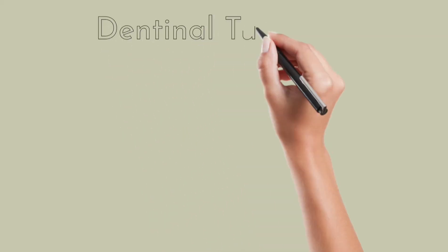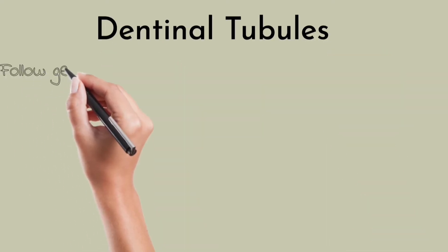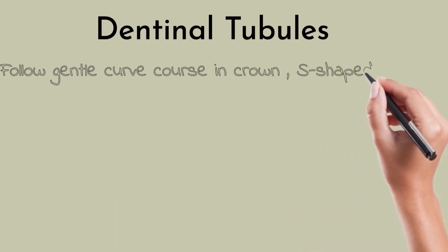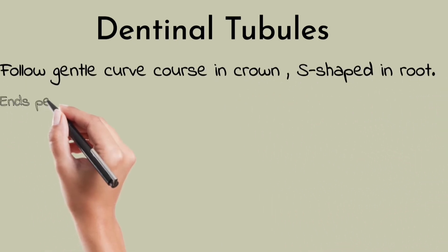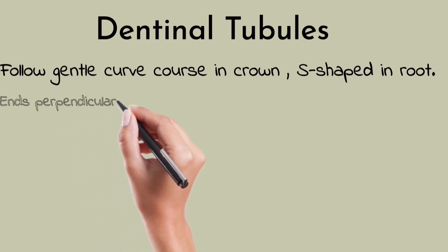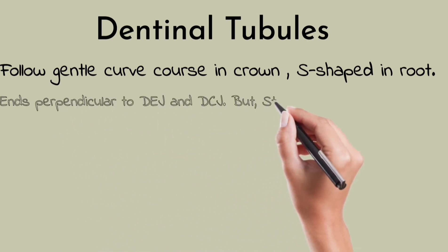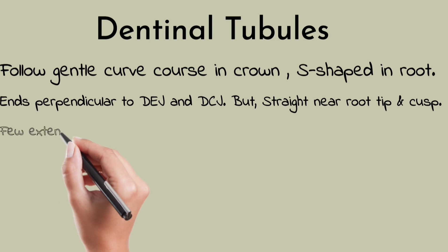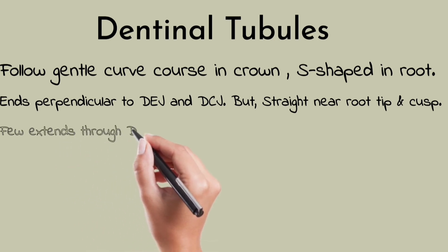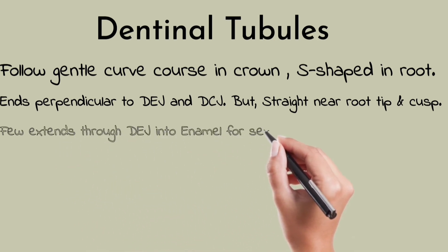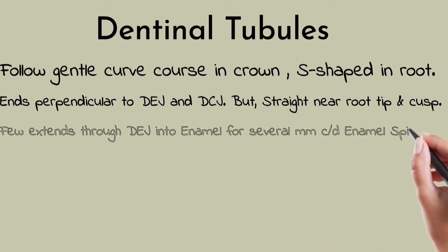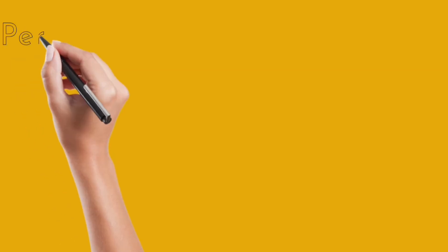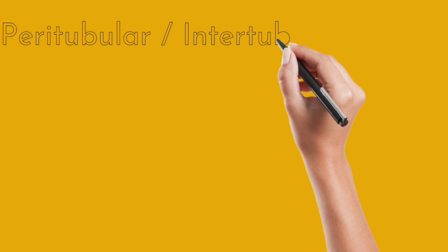Dentinal tubules are the characteristic structures of normal dentine. They follow gentle wavy courses in the crown and are S-shaped in the root — a very important question. They are perpendicular to the dentino-enamel junction and dentino-cemental junction but are straight near the root and cusp tip. Many extend several millimeters into the dentino-enamel junction and are called enamel spindles.